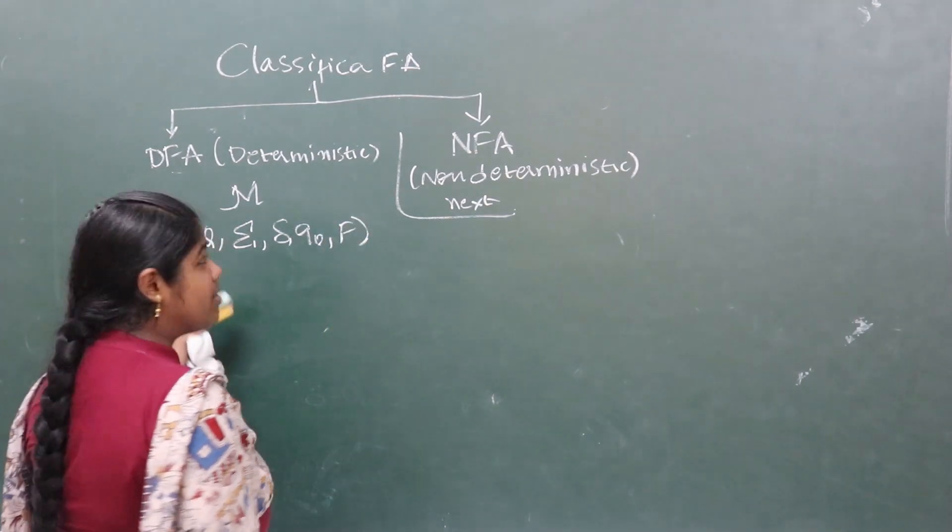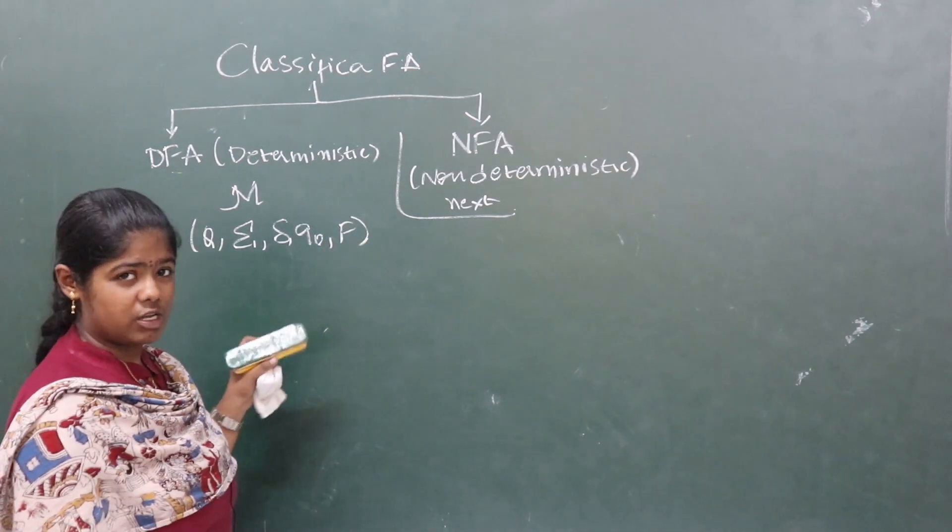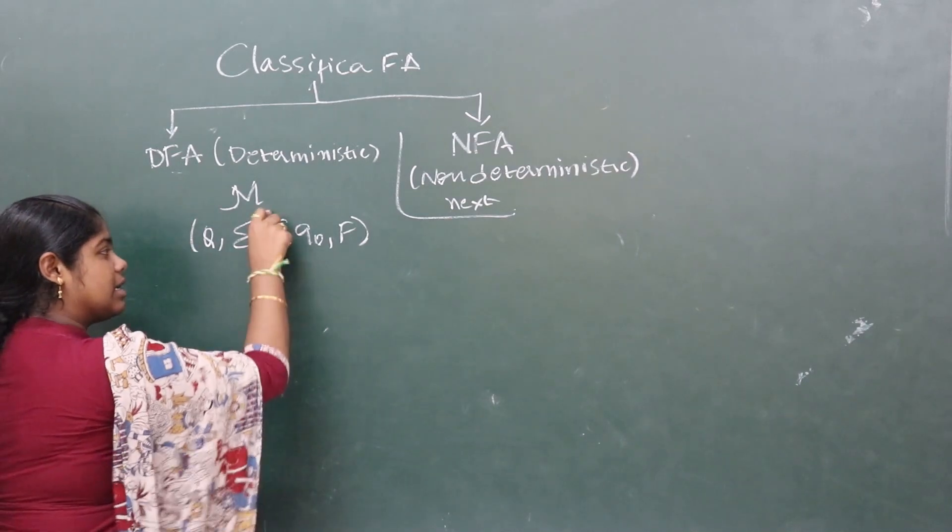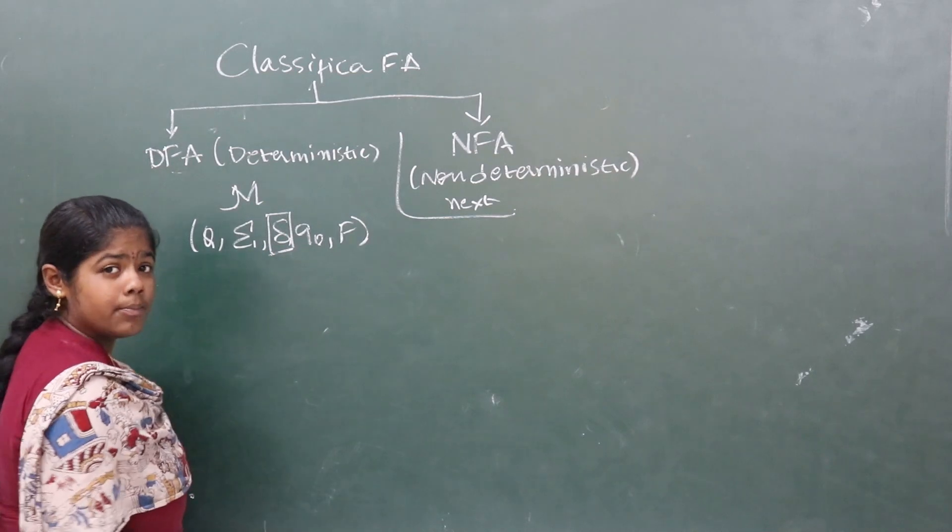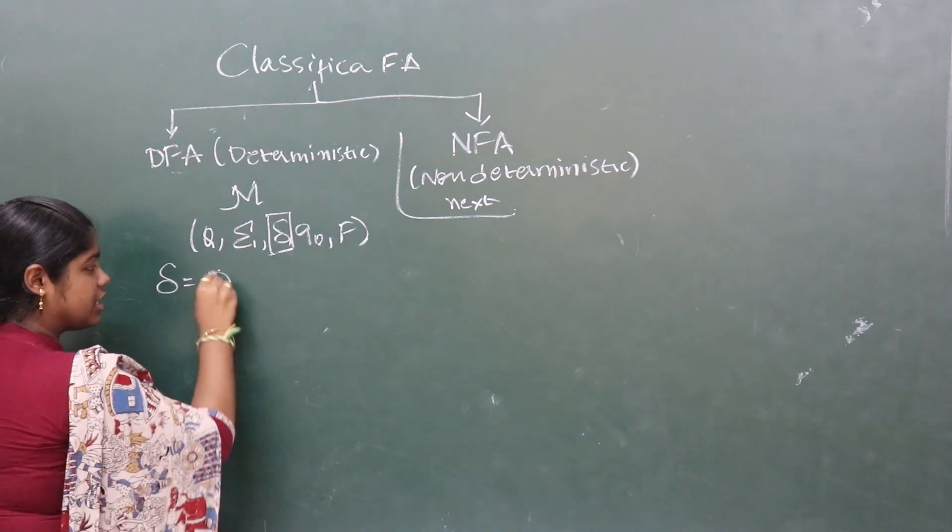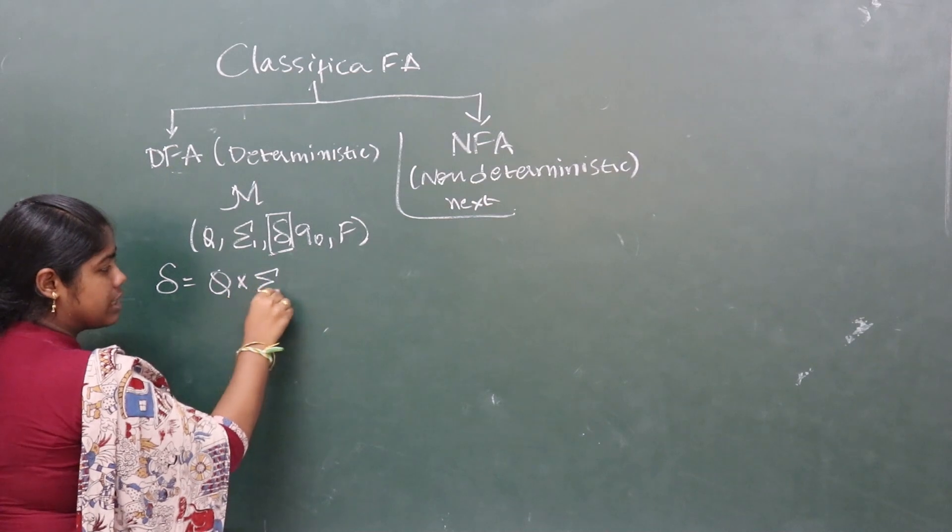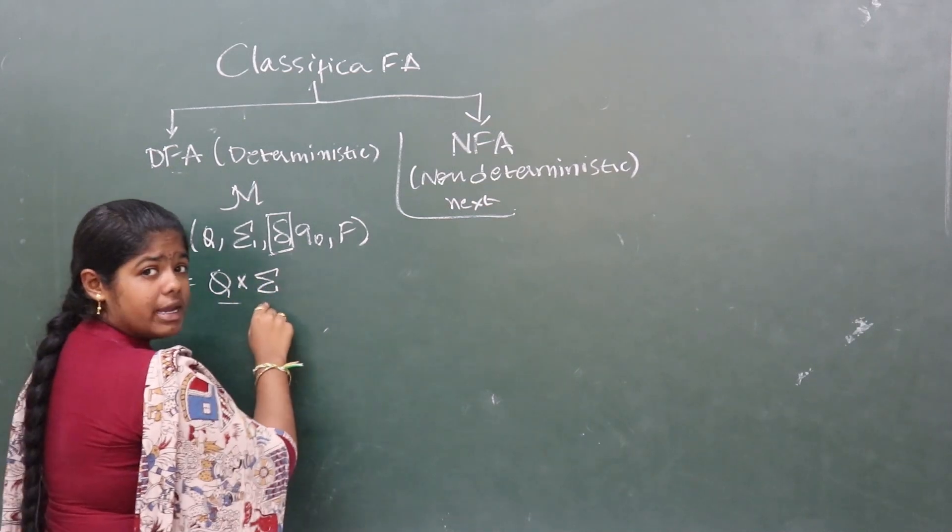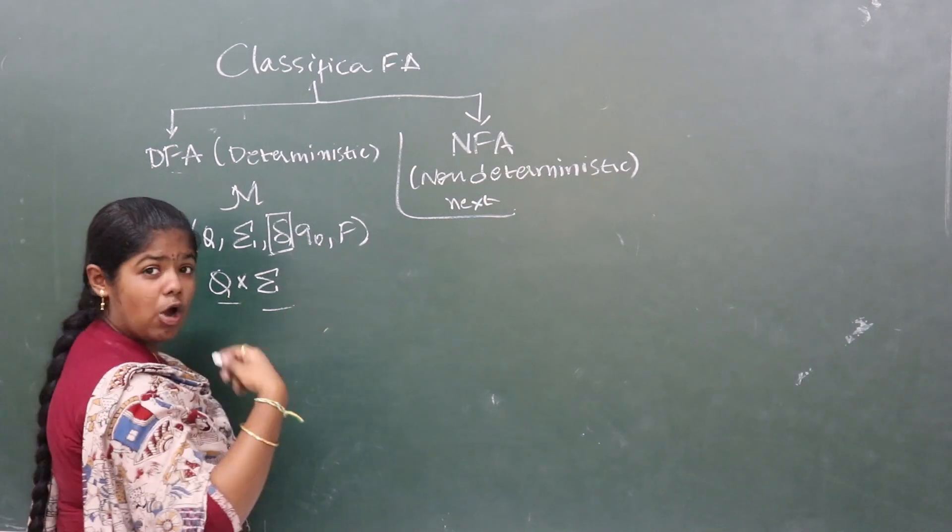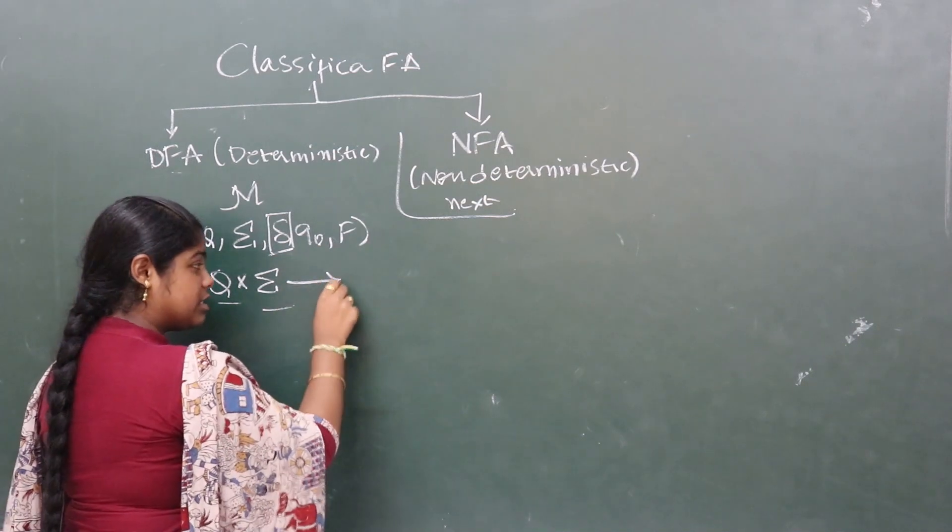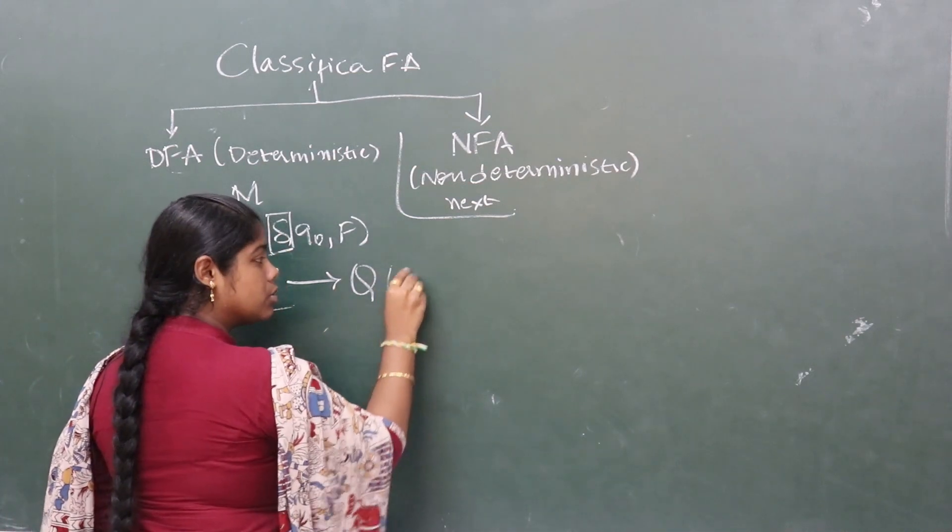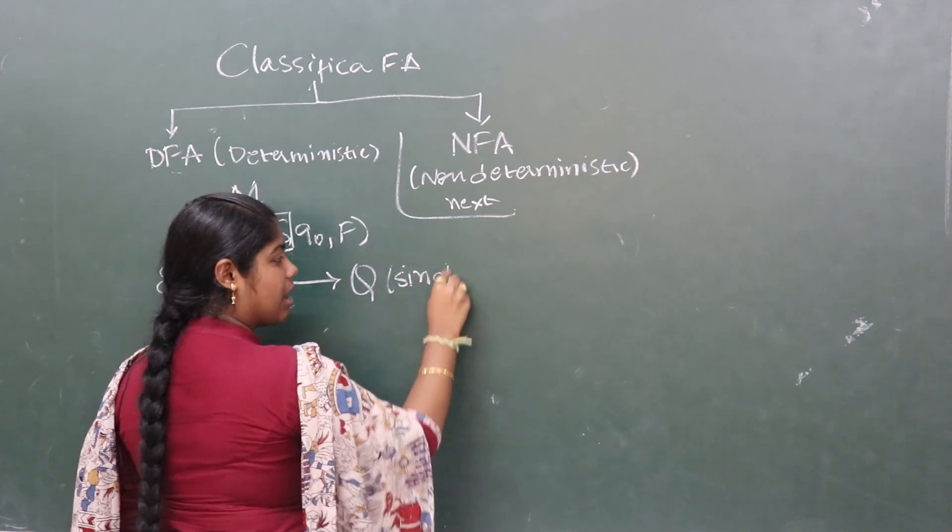The tuples are the same, the definition is the same. What is the difference between finite automata and DFA? The difference is in the transition function. As we have discussed, the transition function takes Q cross sigma as input. For an input state Q and input alphabet, the output state must be from Q and must be a single state.